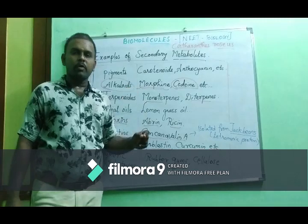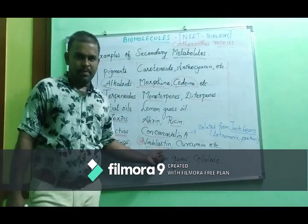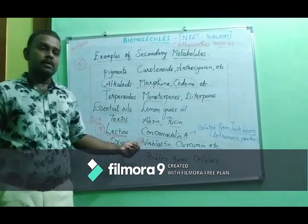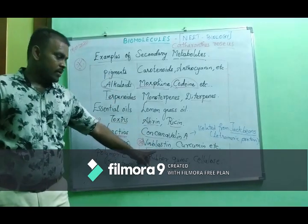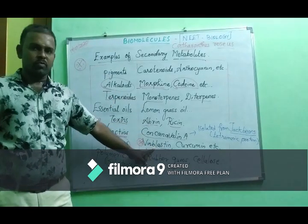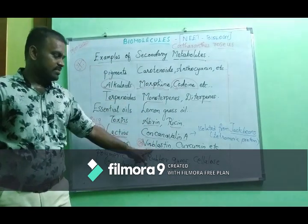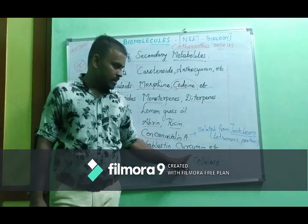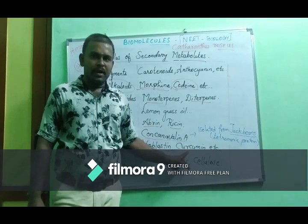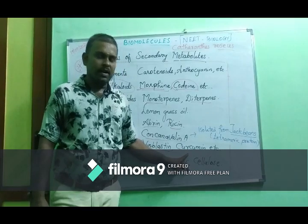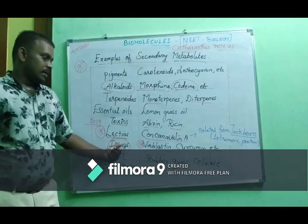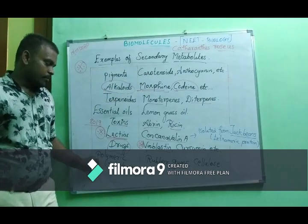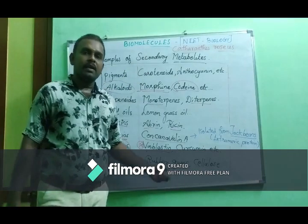Catharanthus roseus produces two important compounds effective against brain tumors and breast cancer. This is a very important example of a secondary metabolite. Curcuma also produces curcumin, an antiseptic compound — another example of a drug molecule classified as a secondary metabolite.